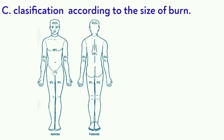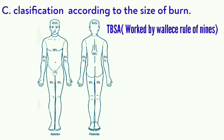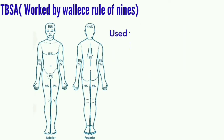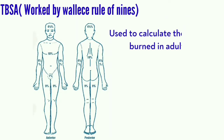We have classification according to the size of burn. In case of a burn injury, the total body surface area, abbreviated as TBSA, involved is usually worked out by the Wallace Rule of Nines — a calculation used to calculate the total body surface area that is burned in adults.